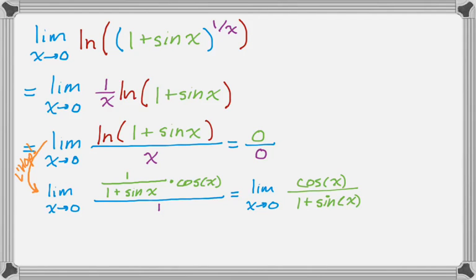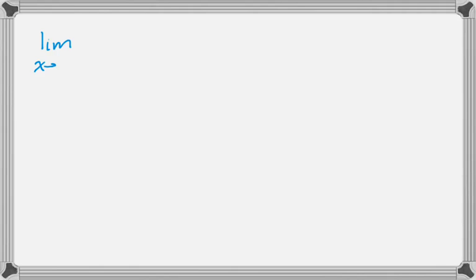And now, if I take the limit, I get 1 over 1, which is 1. So, I'm putting that in this box. This is the same color as the box on the previous screen. Because what I want to do now is go back to the two boxes that I had.